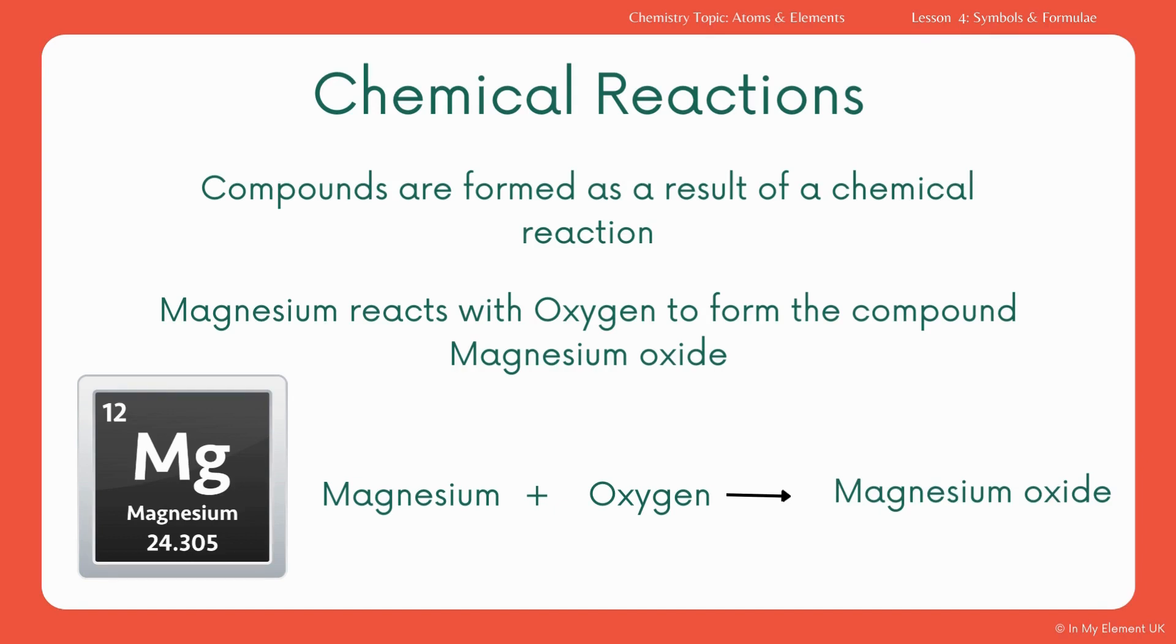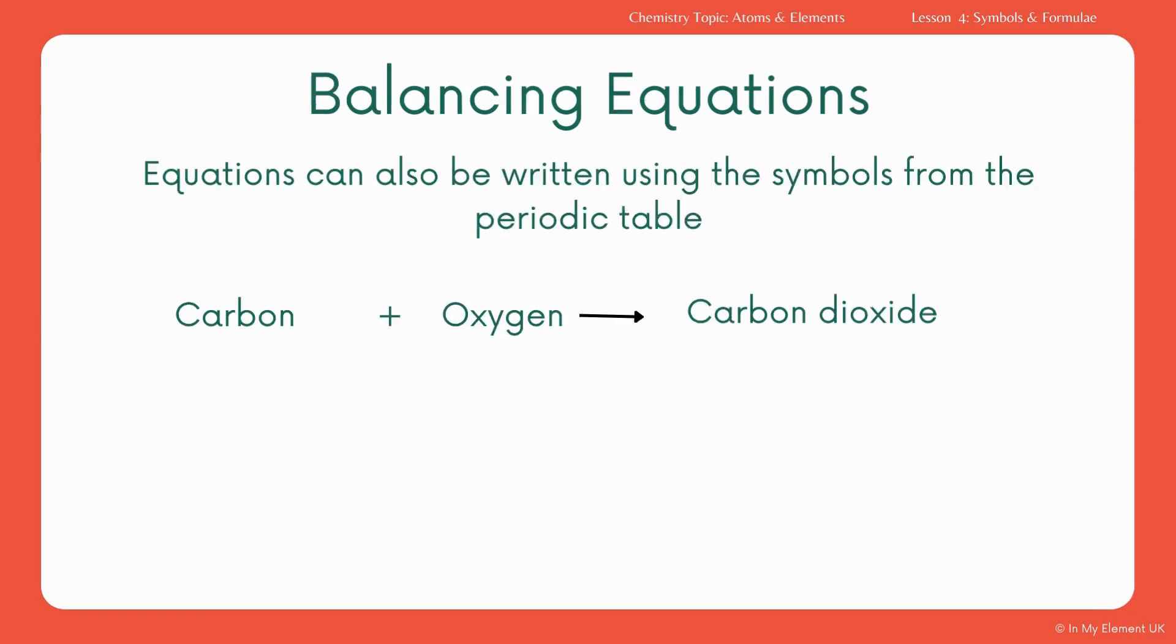Now, your symbol equation would be different, and we're going to look at those with some different examples. So, you can also write them with the symbols. We've got one here, carbon plus oxygen. Those are the reactants made carbon dioxide, which is the product. Using our periodic table, we can see that carbon is a capital C letter, and we can also see that oxygen is O.